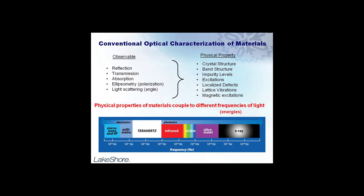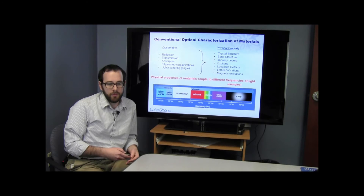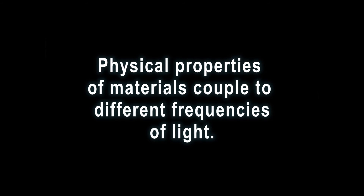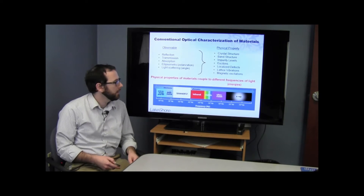From those observables, depending on the frequency of light, we're able to derive physical properties of a given material. Again, depending on the energy, frequency, or wavelength of light, those properties could include things like the crystal structure, the band structure of the material, all the way down into the magnetic excitations that go on in certain materials. The overall thesis is really that physical properties of materials are going to couple to different frequencies or different energies of light.